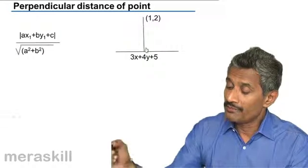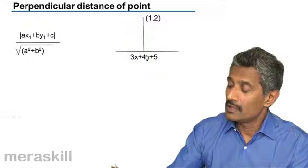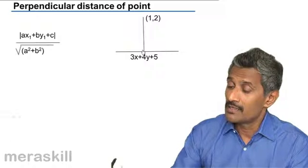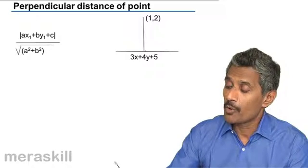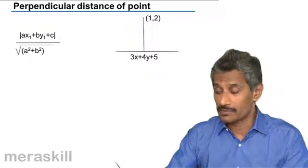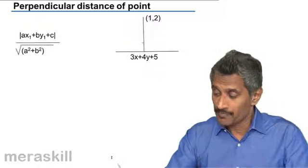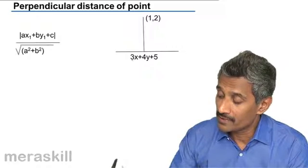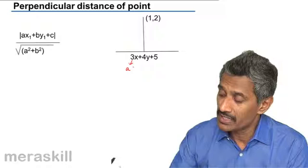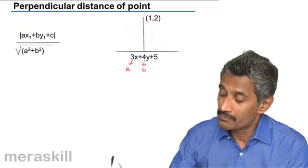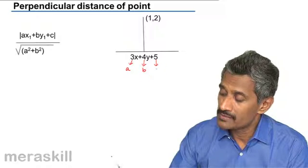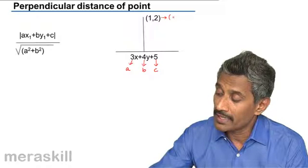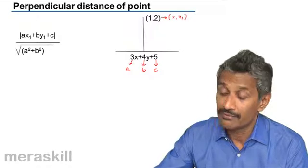Now we have, for example, the perpendicular distance of a point from a particular line. Suppose a particular line has been given: 3x plus 4y plus 5, where 3 is a, 4 is b, and 5 is c, and this is the point (x1, y1), which is (1, 2).